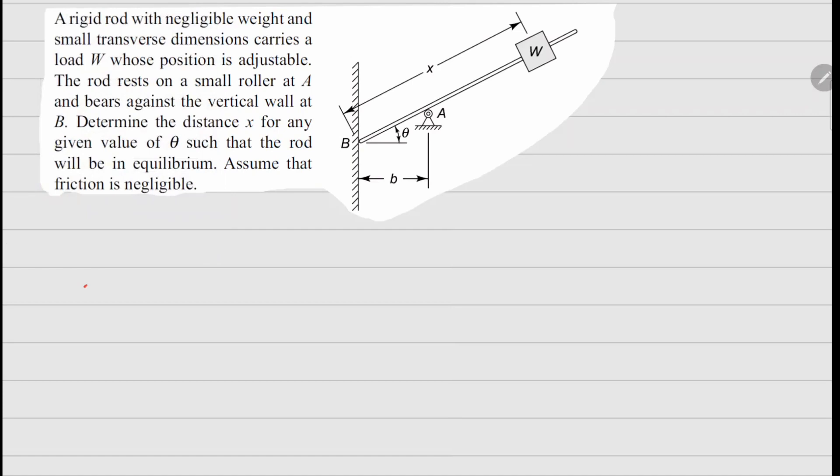The rod rests on a small roller at A and bears against the vertical wall at B. Determine the distance x for any given value of theta such that the rod will be in equilibrium. Assume that friction is negligible.